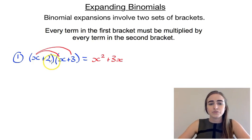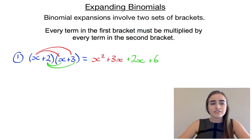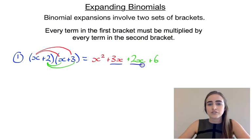Now we need to do the same thing for the 2. So if we go 2 times x, that would give us 2x. And then 2 times 3 would give us 6. So our final answer then, we need to collect our like terms, which are the 3x and the 2x. So our final answer would be x squared plus 5x plus 6.